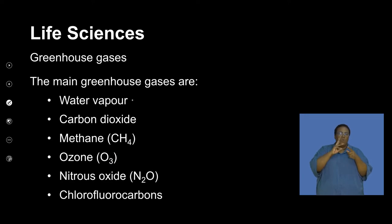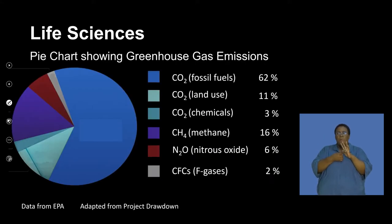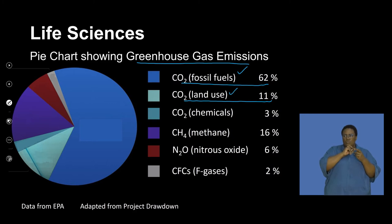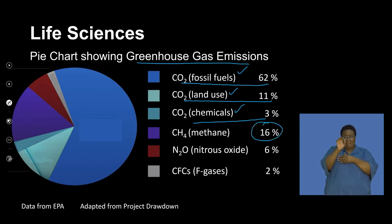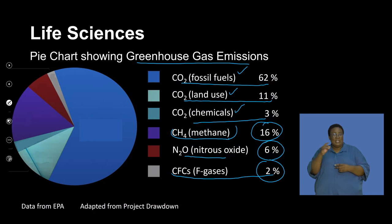The main greenhouse gases are water vapor, carbon dioxide, methane, ozone, nitrous oxide, and chlorofluorocarbons. A pie chart illustrates their proportional distribution. A large percentage is made up of carbon dioxide, produced predominantly by fossil fuels, with smaller contributions from land use and chemical reactions. Methane makes up 16%, often coming naturally from the earth and from livestock and fermentation. Nitrous oxide makes a smaller percentage and chlorofluorocarbons account for 2%.